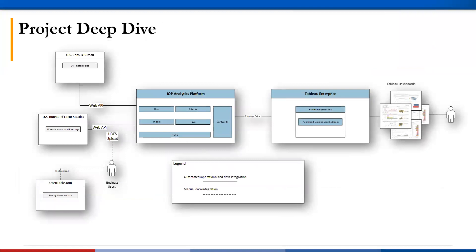For a quick project deep dive — in this functional diagram, you can see the data sources are broken up by the methodology of how the data was ingested, and lines note whether or not it was an automated ingestion process or contained some manual work. Once the data is ingested, it is transformed and published to Tableau Server's Enterprise Agency site. The dashboards were then created in desktop and published to be viewed by our stakeholders.